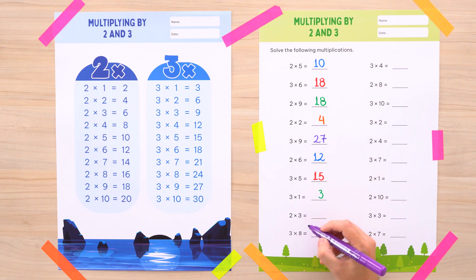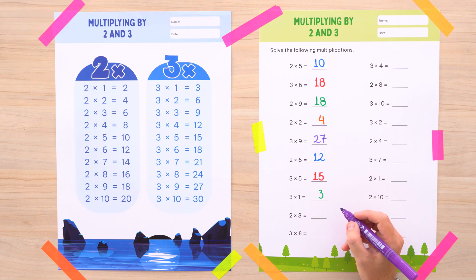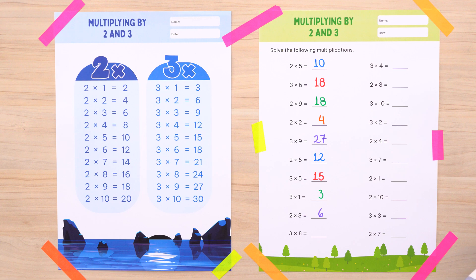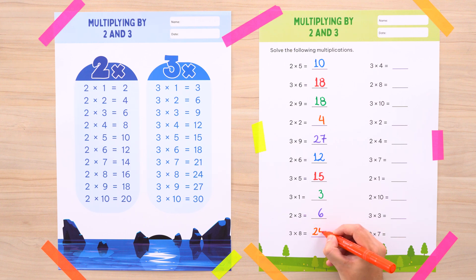One more: 2 times 3. 2 times 3 is equal to... 6. 6 is the answer. And in the final problem we have 3 times 8. And 3 times 8 is equal to... 24. That is correct — 24 is the answer to this problem.